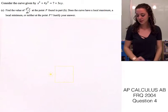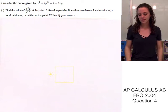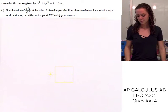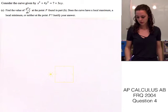I'm going to be continuing with part C, which says, find the value of the second derivative at point P, which we found in part B. And, it's asking, does the curve have a local maximum, a local minimum, or neither at this point.